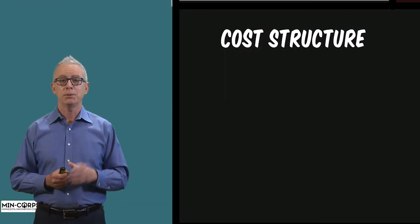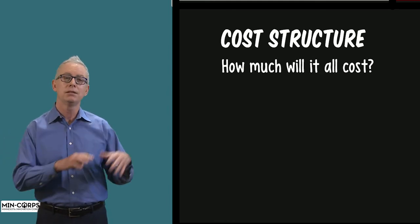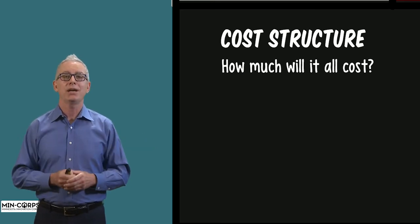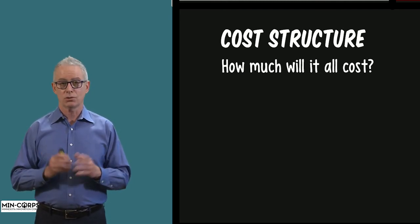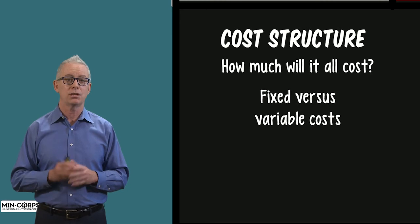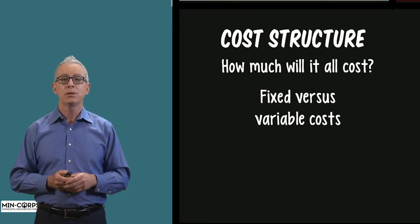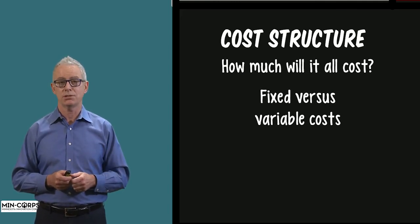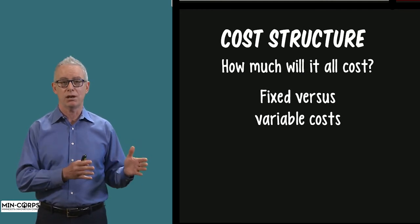Building block nine: we now have a sense of the product-market fit, the value we're delivering to which customers, through what revenue model, and a sense of the work to be done — what we'll do ourselves and what our partners will do for us. Now we have to look at the final element: the cost structure. This is more than just the total cost; we have to have a total cost that is acceptable given the estimated revenue we can realize.